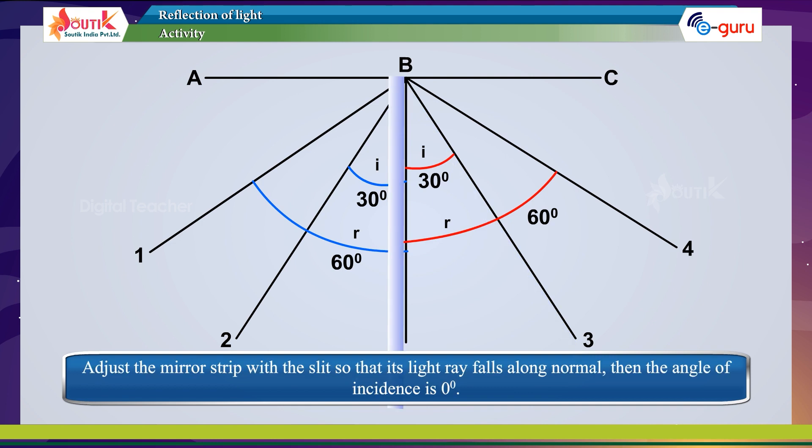Adjust the mirror strip with a slit so that its light ray falls along the normal. Then the angle of incidence is 0 degrees.